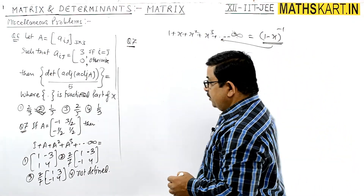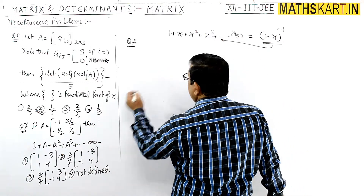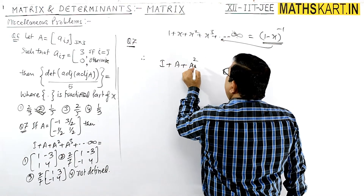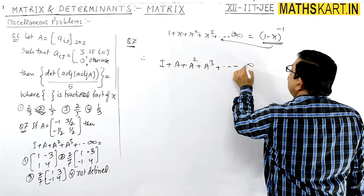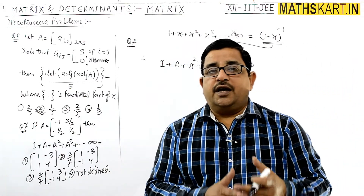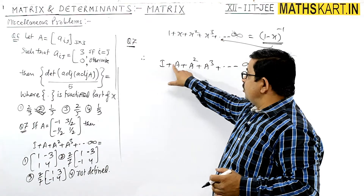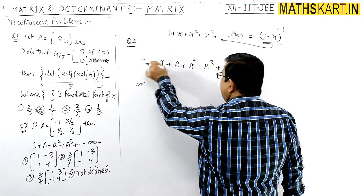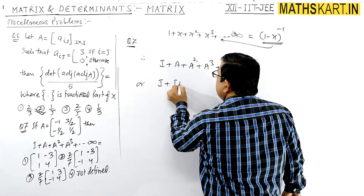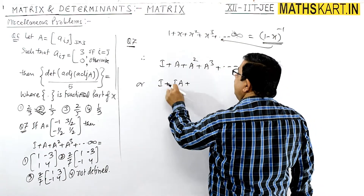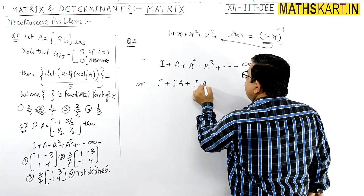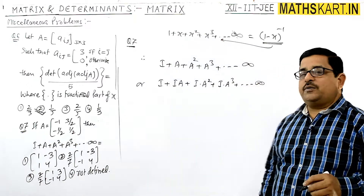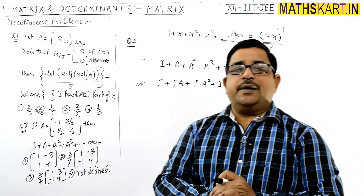We have to find I + A + A² + A³ + ... up to infinite. By analogy with the scalar series, this equals (I − A)^(−1). We can factor out an identity matrix: I + I·A + I·A² + I·A³ + ..., since multiplying by the identity matrix gives the same matrix.